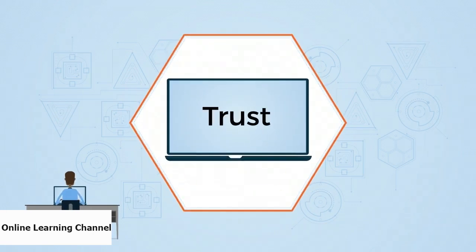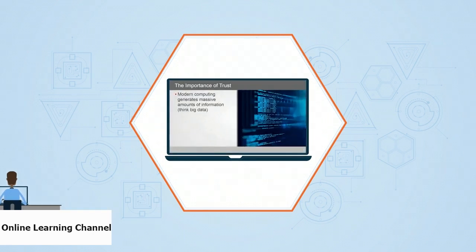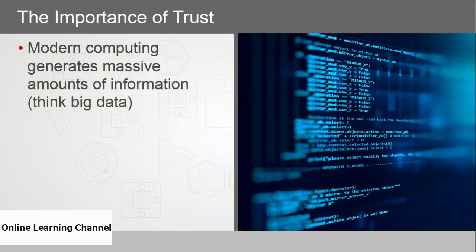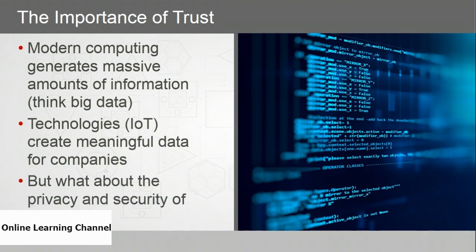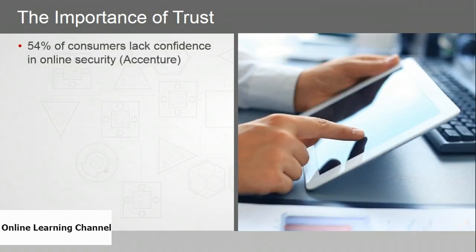Trust has become more important than ever. Modern computing generates massive amounts of information — big data. Every day we use multiple devices to connect and communicate, make purchases, and search — creating not just a digital footprint but a trail of breadcrumbs that can be mined and analyzed. The technologies we use create meaningful data that companies can use to provide better experiences and analyze behavior. But what about the privacy and security of users? More than half of consumers lack confidence in online security.